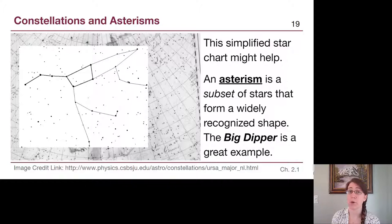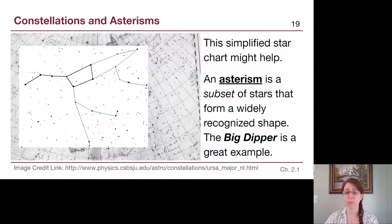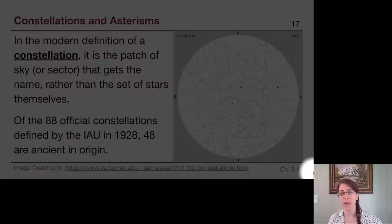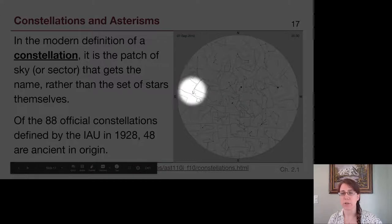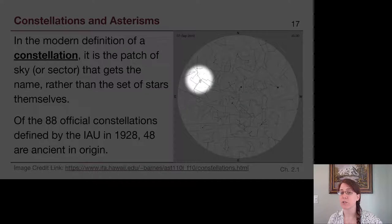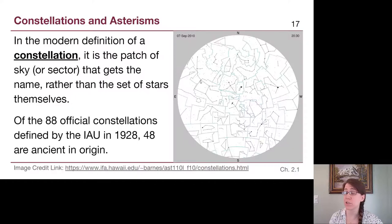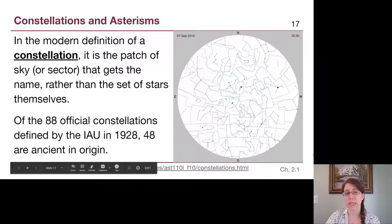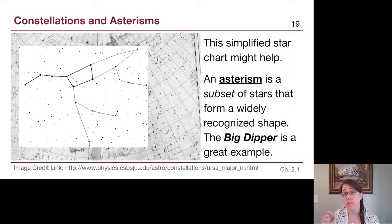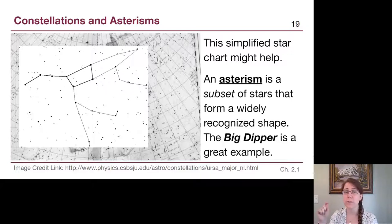The Great Square of Pegasus is a fabulous example of an asterism. This big square shown here is a great example because only three of these four stars are actually in the constellation of Pegasus — the fourth is in the constellation of Andromeda. So an asterism doesn't even need to be a subset within a single constellation. It's just a really well-known simple pattern that we use to navigate the night sky.